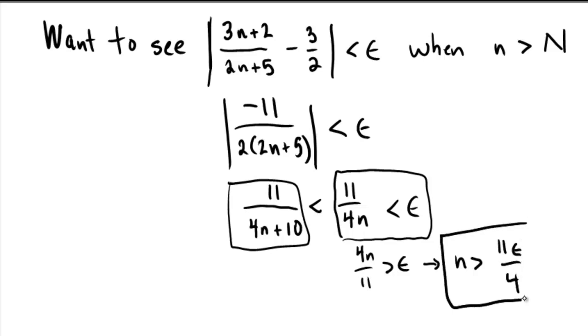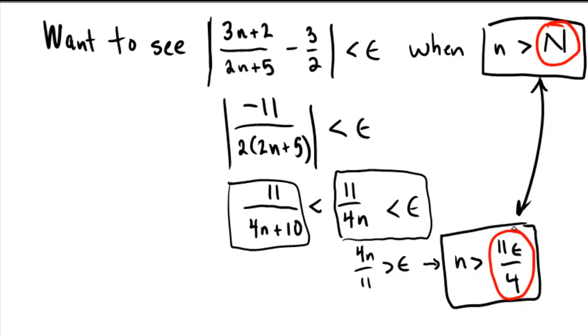So this inequality coupled with this inequality together seem to indicate that for capital N, a good choice for our capital N here could be 11 epsilon over 4. And that's a much more elegant bound. It makes the arithmetic and the algebra a lot easier to work with in our proof.